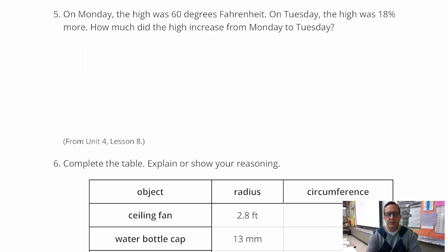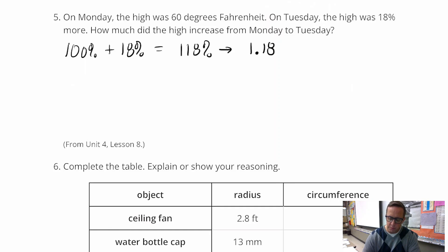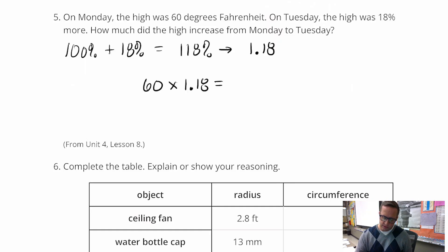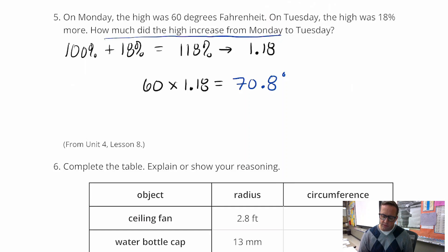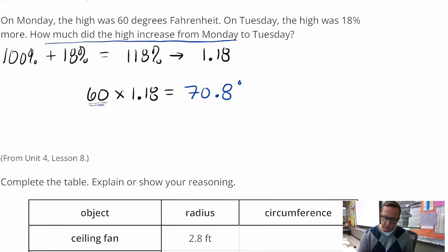Number five: on Monday the high was 60 degrees. On Tuesday the high was 18% more. So how much did the high increase from Monday to Tuesday? This is a percent of increase, so we're going to add 100% plus 18%, which is 118%. Convert that to decimal form: 1.18. So you're just going to do 60 times 1.18, and you get 70.8 degrees Fahrenheit. It says how much did it increase — if we take 60 away, we get 10.8.